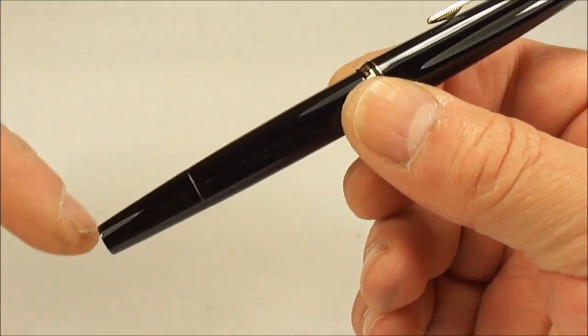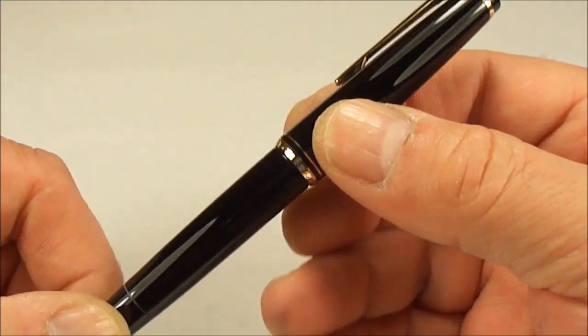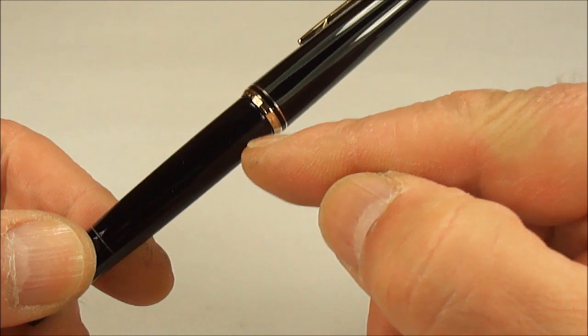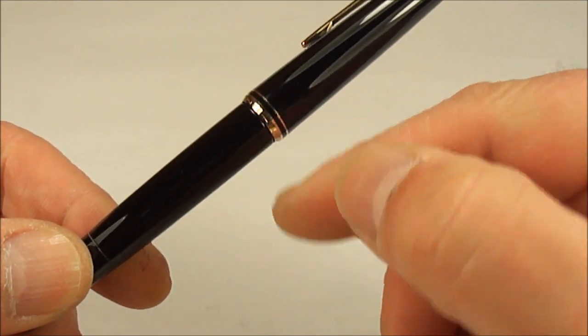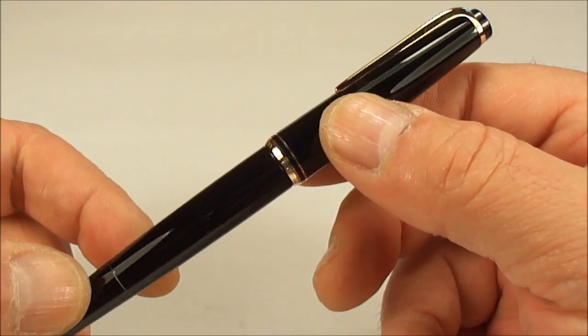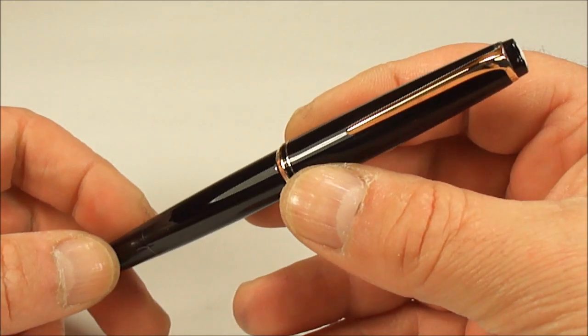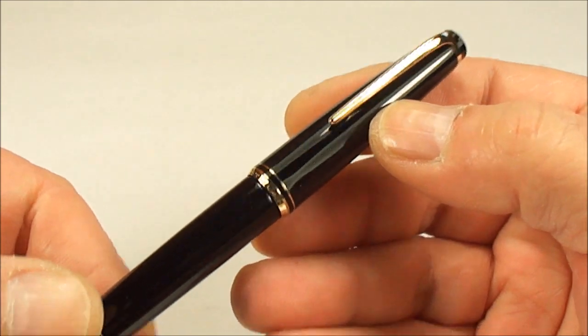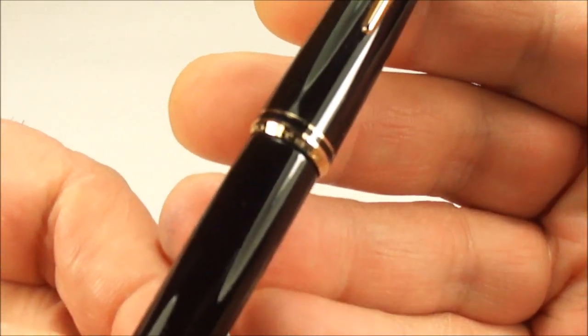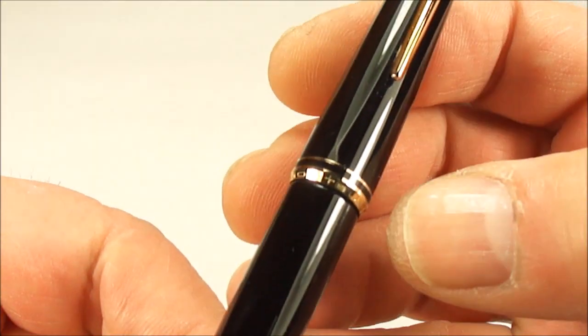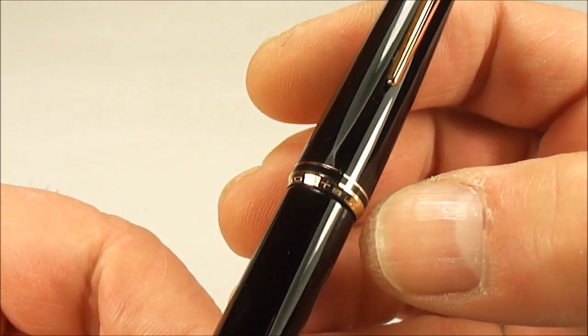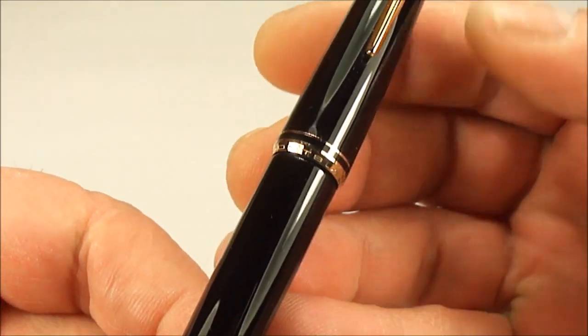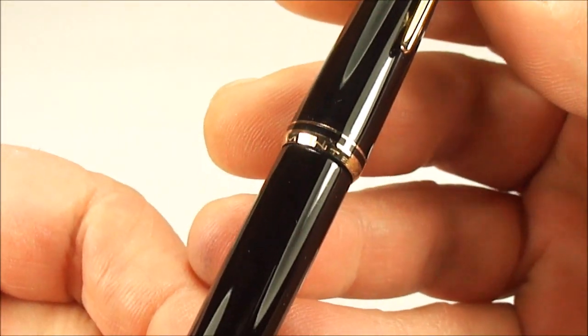As you can see it's got a slight taper to the barrel and the cap, and to the widest area here the diameter is around about 11.5 millimeters in diameter. As you can see it comes with gold plated trim. First of all you'll notice it has these two cap bands. A slightly thicker one to the bottom and a slightly thinner one just above it.